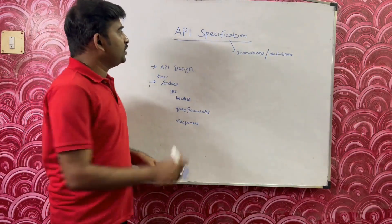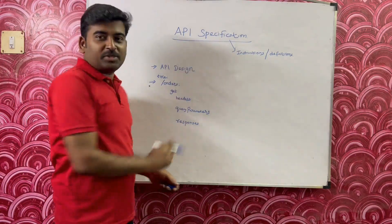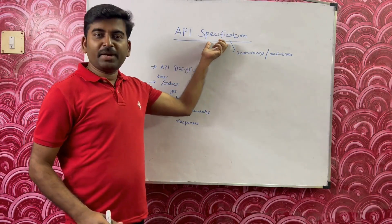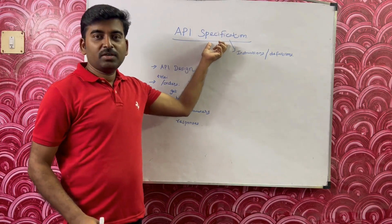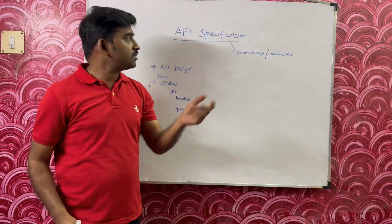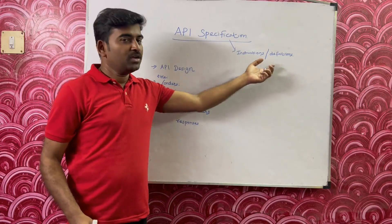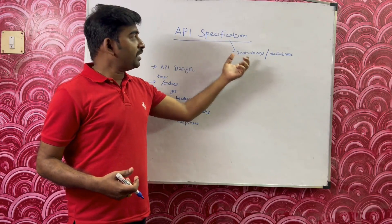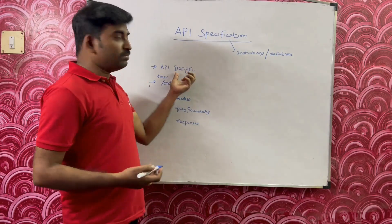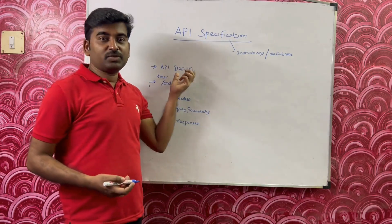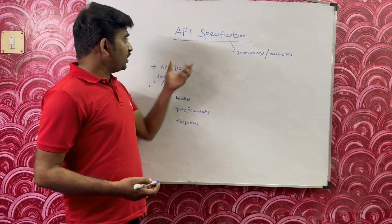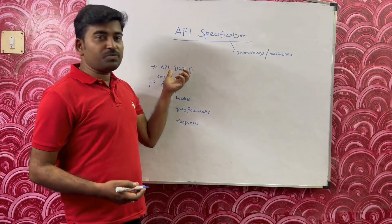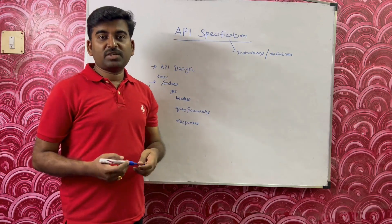In this video we are going to see what is API specification. Specification means instruction or definition. For example, if you are developing some API, you need to give or write some design for it. API specification is done at the stage of API design — in the API design phase we need to give our instructions about our API.